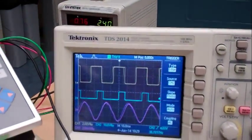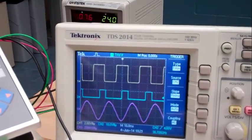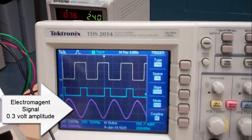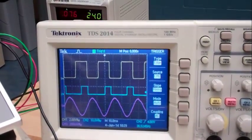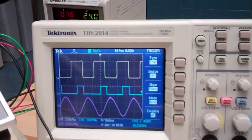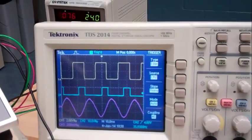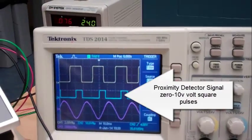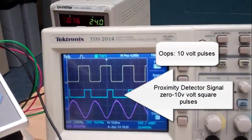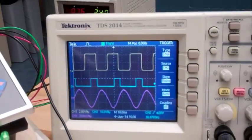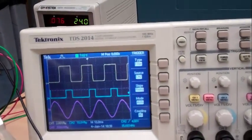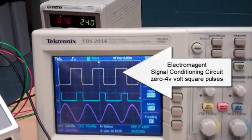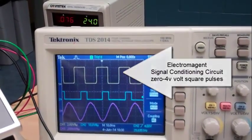There's the oscilloscope showing three of the signals. The bottom signal is the signal coming from the magnet, the electromagnet. The middle signal are square pulses, five volt pulses coming from the proximity detector. And the top one are the square pulses coming from the signal conditioning circuit.